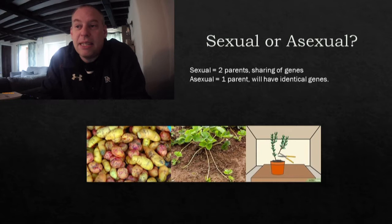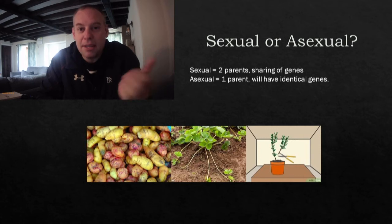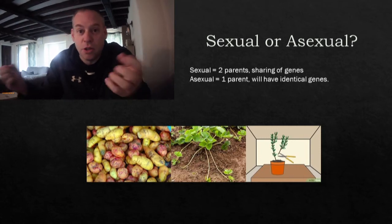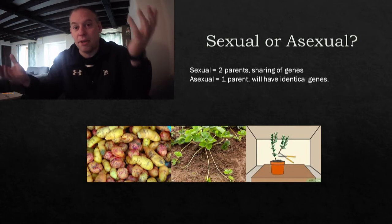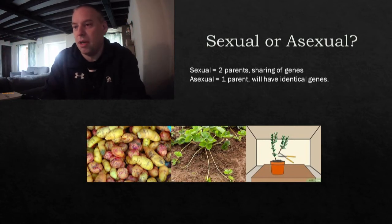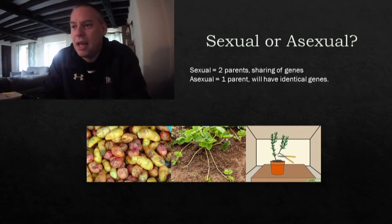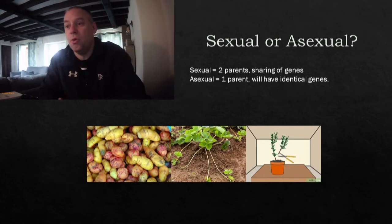Sexual reproduction involves sharing of genes across two parents. You need a male gamete and a female gamete — those two need to come together from separate parents. One from a mum and a dad, and they come together to produce a zygote, which then grows into a new organism.